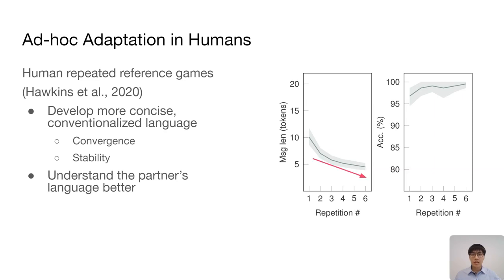In this process, the messages converge and stabilize, meaning that messages for an image will have less variation from one repetition to another, and eventually the humans would repeatedly use the short, conventionalized message. The lexical convergence and stability are important for efficient communication, because otherwise the listener needs extra effort to reason about unseen referring expressions. Another property of this process is that the listener would understand their partner better, achieving higher game accuracy over time.